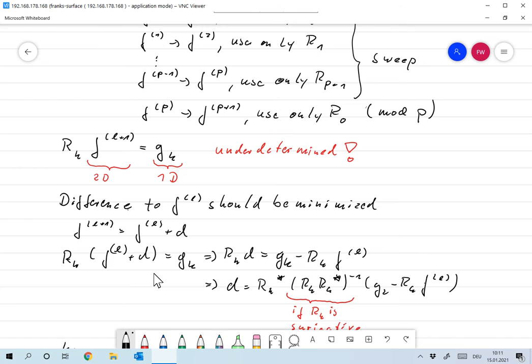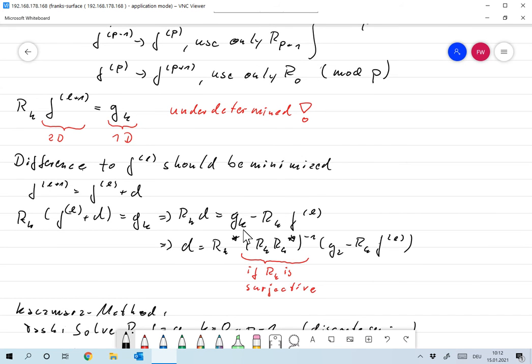And that means we must choose d as the minimum norm solution. Putting R_k f_l on the other side, then this becomes the linear equation R_k d is g_k minus R_k f_l. The minimum norm solution of that is given by R_k adjoint times (R_k R_k adjoint) to the minus one times (g_k minus R_k f_l). That's only true if R_k is surjective, and we will always assume that this is the case.